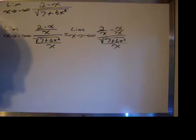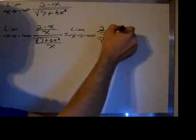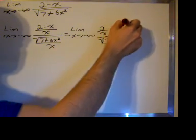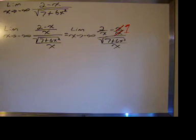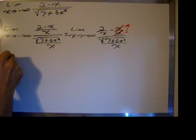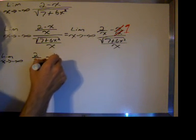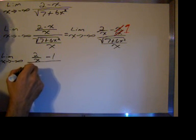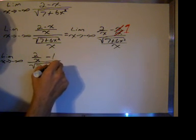That will simplify. x over x becomes 1. So I'll rewrite the expression and take care of the denominator in the same step. We have the limit as x approaches negative infinity of 2 over x minus 1, divided by the square root of 7 plus 6x squared.